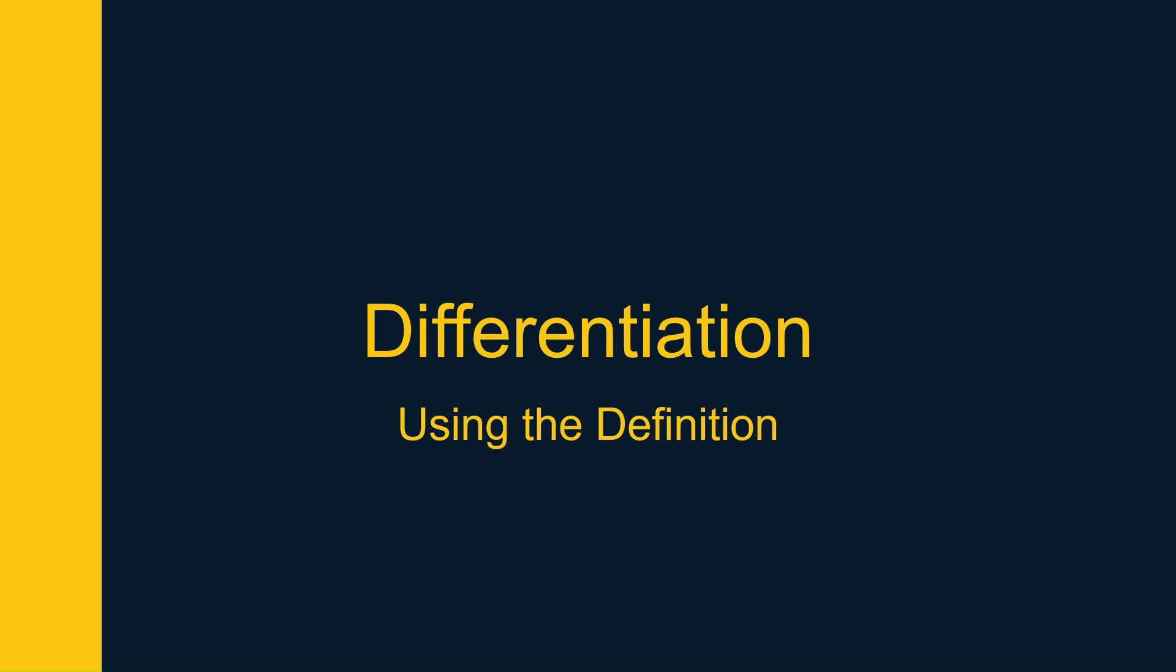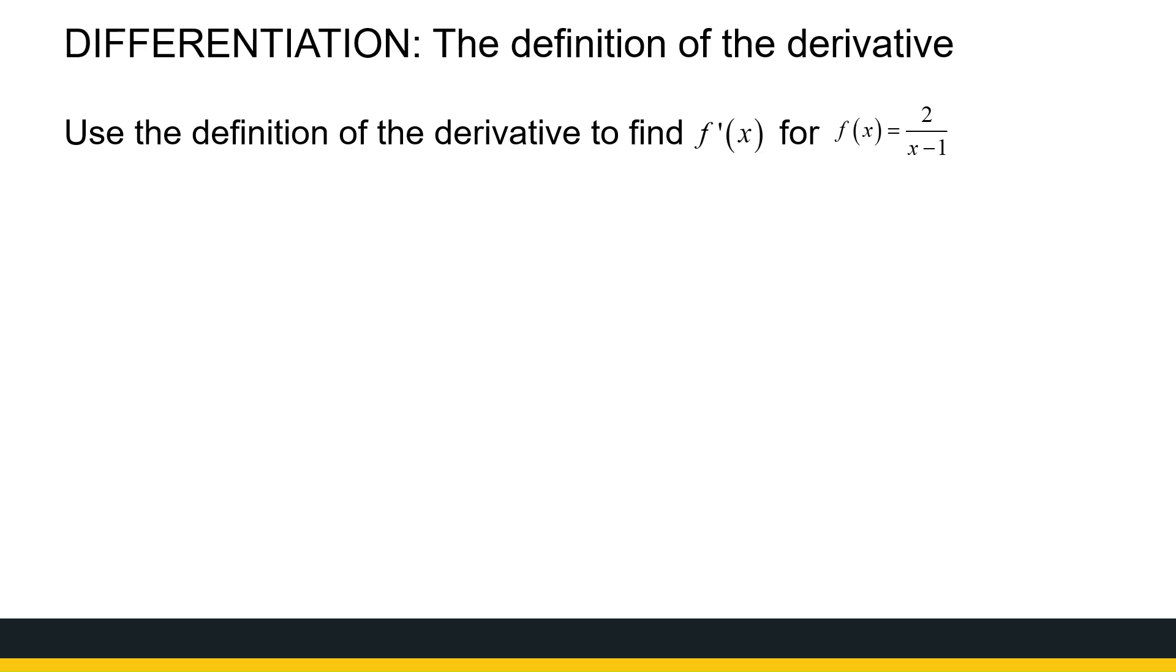We've now looked at how to define the derivative and using the definition of the derivative to find the derivative of a function. We'll look at two more examples. Let's look at a function. This is now not a polynomial function like the first one. We've got a rational function 2 over x minus 1. So let's use the definition of the derivative to find this derivative.